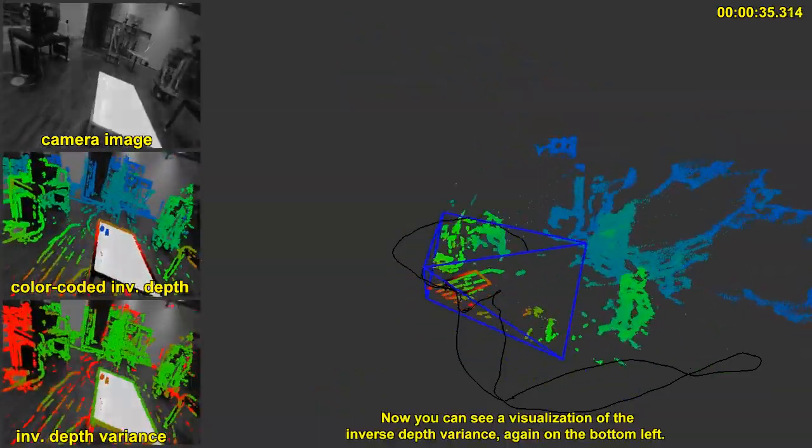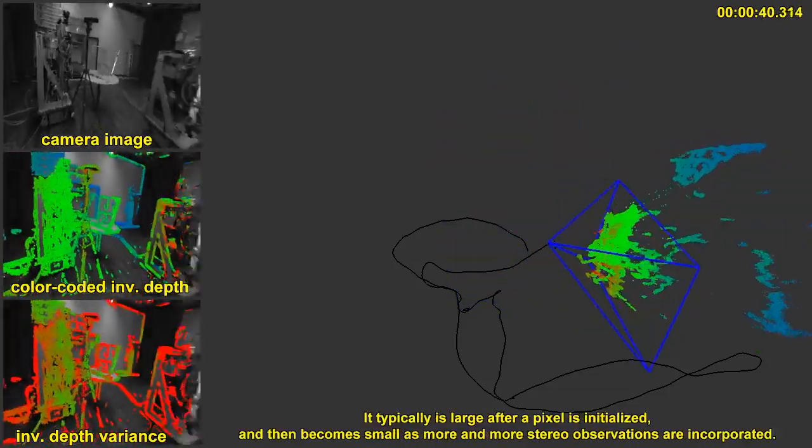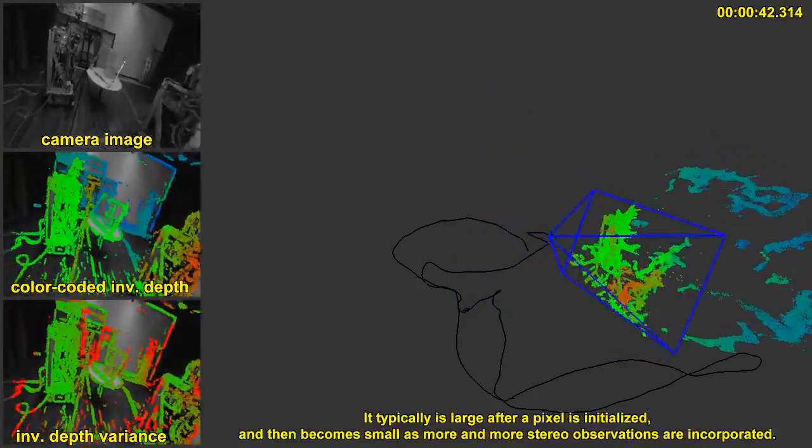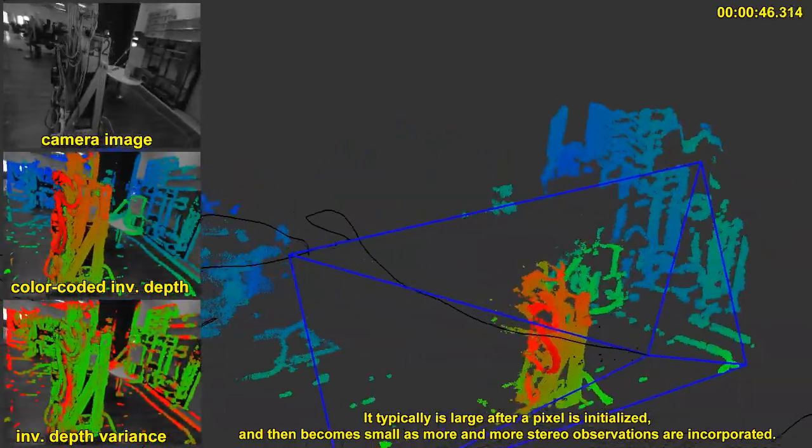Now you can see a visualization of the inverse depth variance, again on the bottom left. It typically is large after pixel is initialized and then becomes small as more and more stereo observations are incorporated.